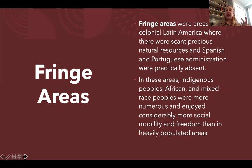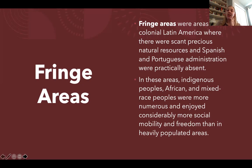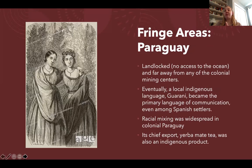Fringe areas in Latin America are spaces where scarce precious natural resources and Spanish or Portuguese administration are basically absent. In these areas, the caste system loosened — indigenous peoples, Africans, and mixed-race peoples mingled more and enjoyed greater social mobility and freedom than in the centers of Spanish and Portuguese settlement. Examples of fringe areas include parts of Brazil, Río de la Plata (Argentina), the Audiencia of Chile, and places in New Granada like Venezuela.